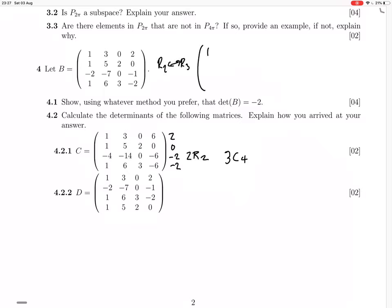So we swap row 2 and row 3 here. At this point, we're going to get 1, 3, 0, 2, minus 2, minus 7, 0, minus 1, 1, 5, 2, 0, 1, 6, 3, minus 2. And then we do another swap. We swap row 3 and row 4, and we get 1, 5, 0, 2, 1, 6, 3, minus 2. Yeah, we get, swap row 3 and row 4, then we get D.